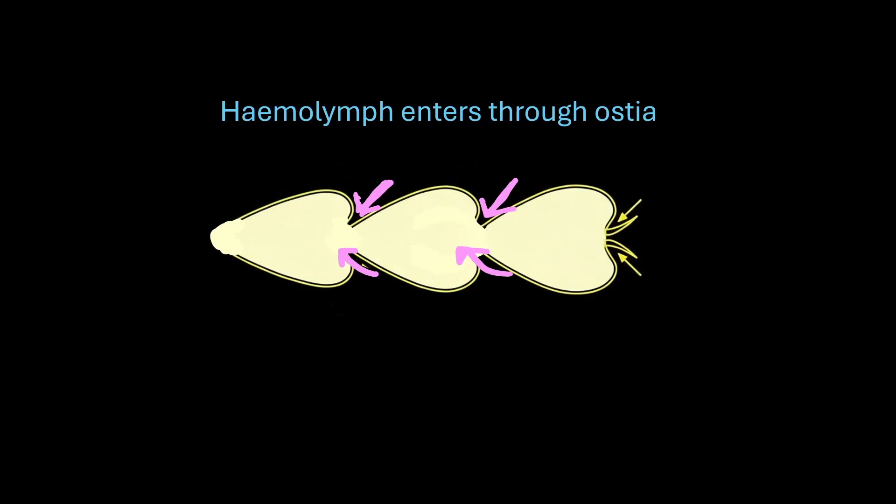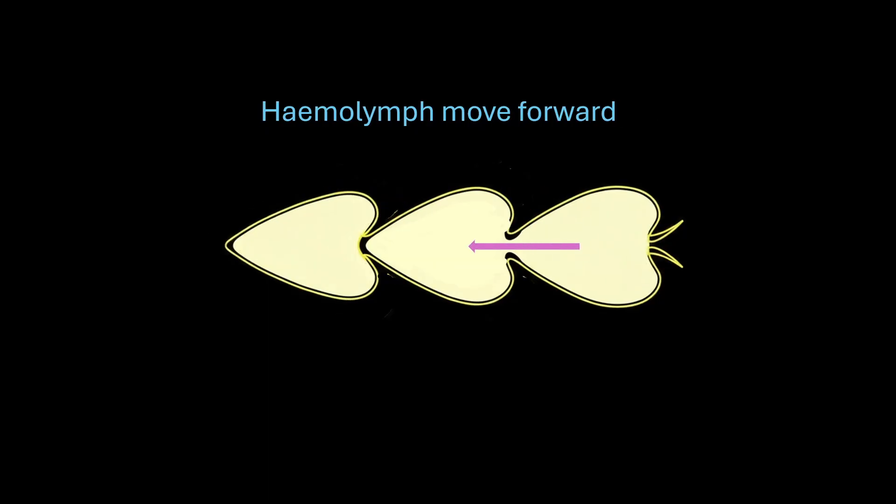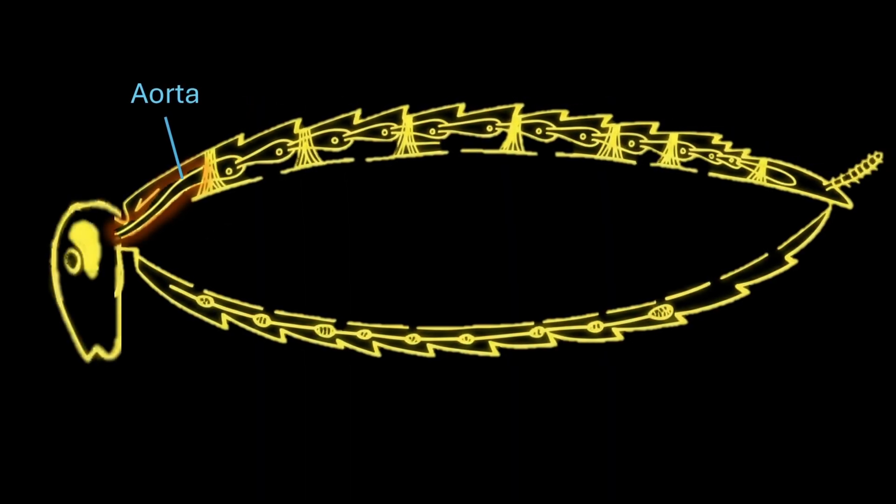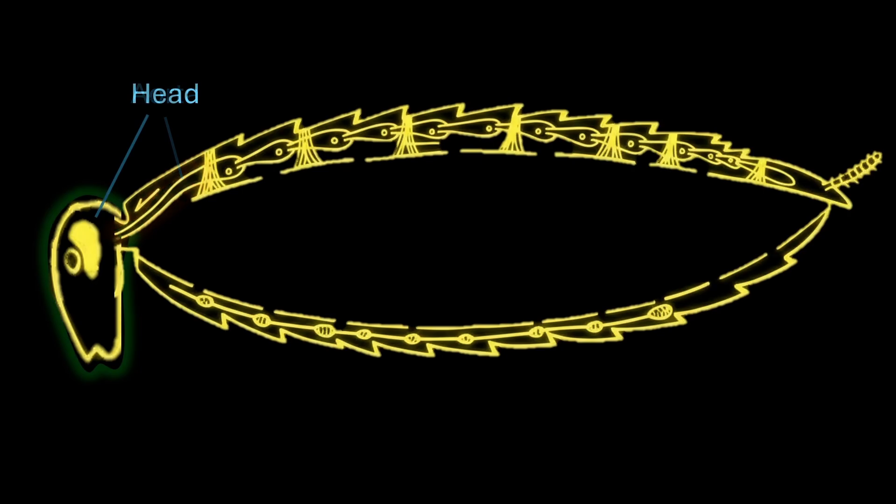Hemolymph finally reaches into the aorta. This aorta opens directly into the head. Once in the head region, the hemolymph is released into the hemocele and flows freely around the organs.